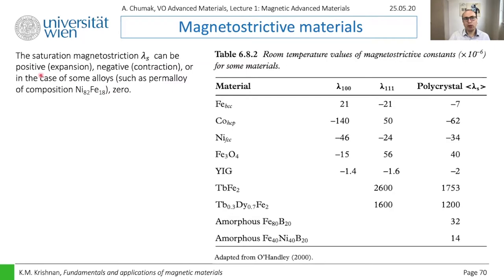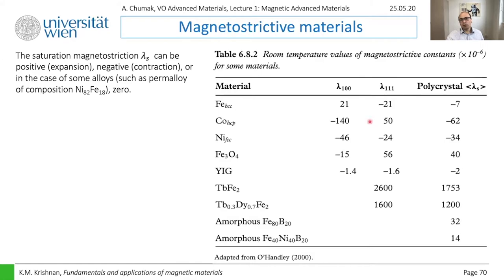As you can see, the saturation magnetostriction parameter can be positive (expansion), negative (contraction), or in the case of permalloy — nickel-iron at approximately 80:20 percent — it is approximately zero, which is why engineers search for such compositions. For a single crystal, it depends on orientation: for iron BCC, you can have positive or negative magnetostriction depending on whether you magnetize along the 100 or 111 axis. The same applies to cobalt and nickel. Permalloy, yttrium iron garnet, and others are listed. Importantly, magnetostriction works not only for single crystals but also for polycrystals and amorphous materials.